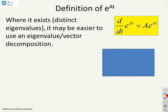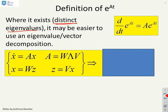So the definition of e to the At. Where it exists, and I'm going to restrict myself to distinct eigenvalues, it may be easier to use an eigenvalue eigenvector decomposition to explain what we mean by e to the At. So here we go. I've got x dot equals Ax, and I'm going to use the eigenvalue eigenvector decomposition. So there it is, A equals W lambda V.